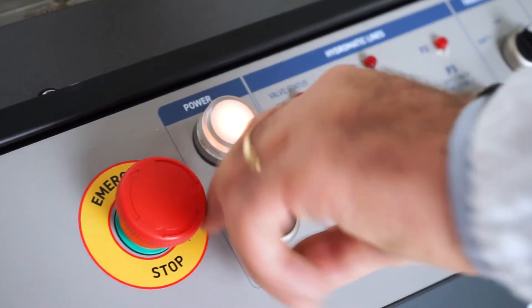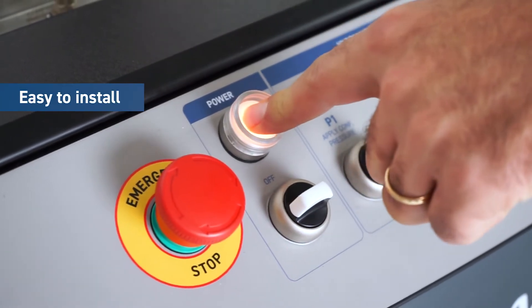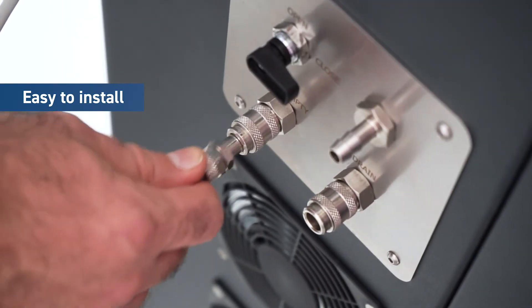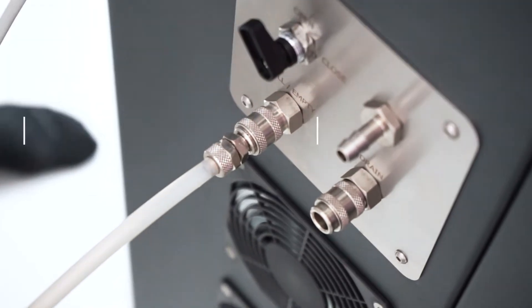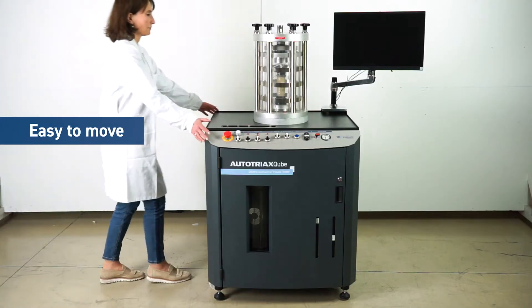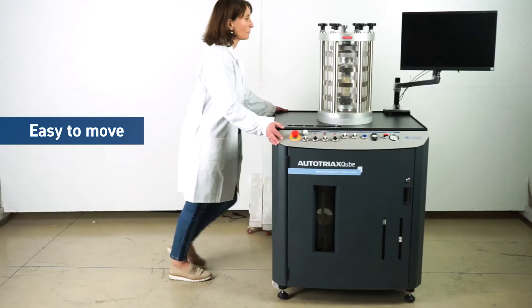There's no need for external panels, a tank, or hydraulic connection. Simply connect the AutoTriax Cube to water and power supply and start testing. No need for complicated disassembling and reassembling. Simply move the cube as space allows in your laboratory.